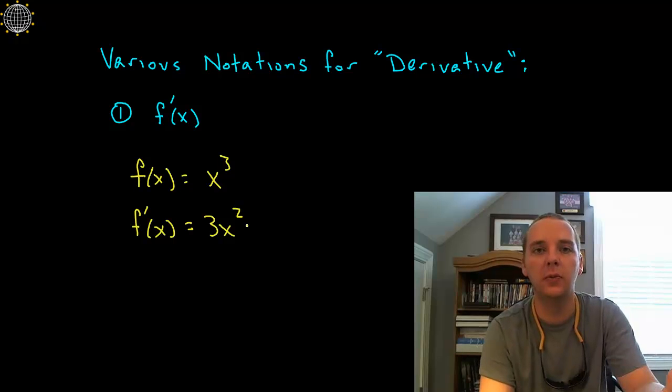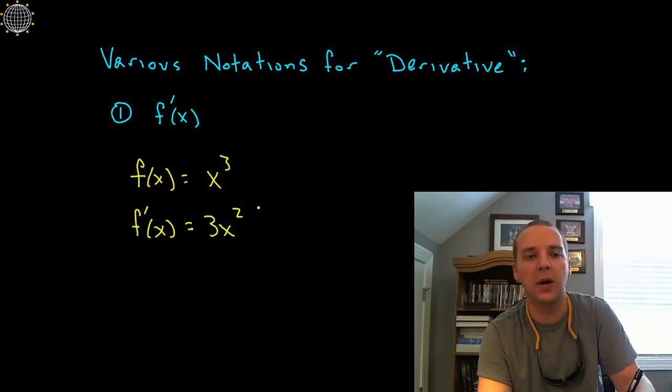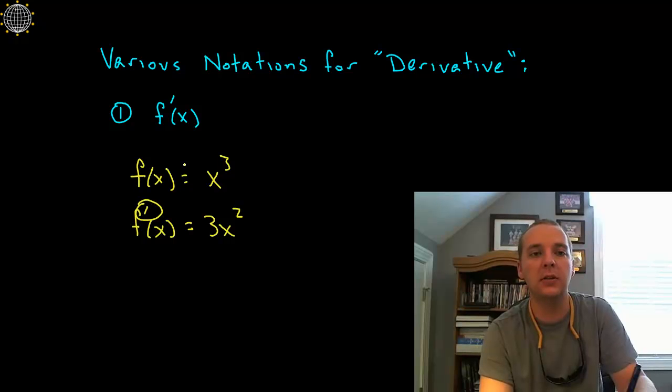You'd say f prime of x is 3x squared, you'd use your derivative rules. We'd bring the power down and whatnot, but the point is that the notation to say derivative is f prime.